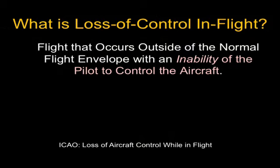An important topic in loss of control is understanding what it is. There's often confusion between what an airplane upset is and what loss of control is. One can lead to the other, but they don't necessarily follow each other. One definition: flight occurs outside the normal flight envelope with an inability of the pilot to control the airplane — meaning an inability to properly stop the flight path divergence, to get the airplane to do what he wants as the end result.